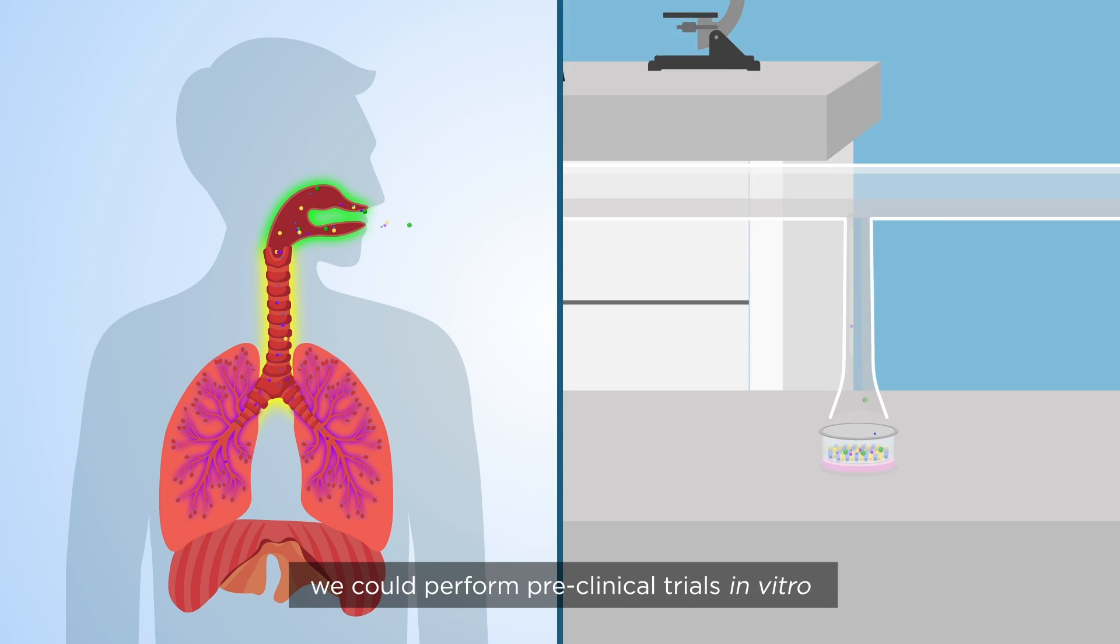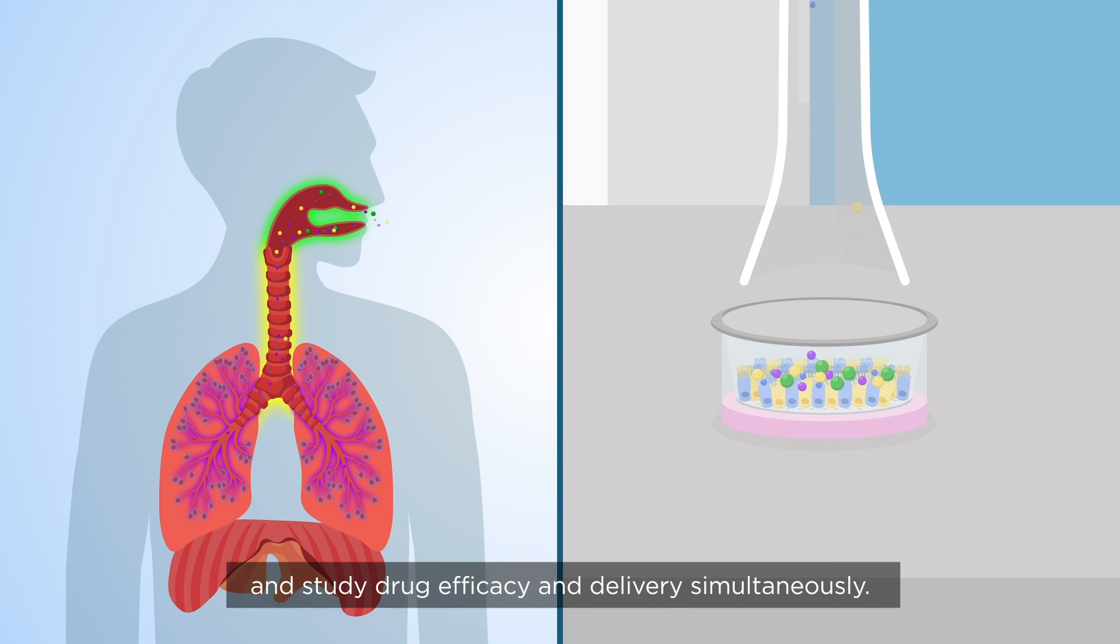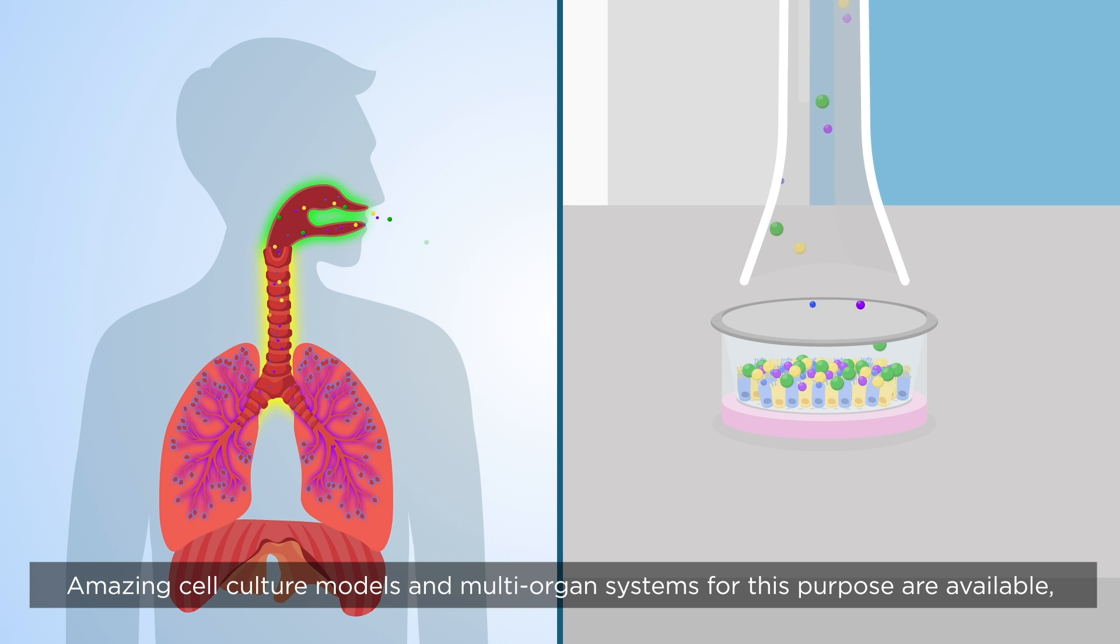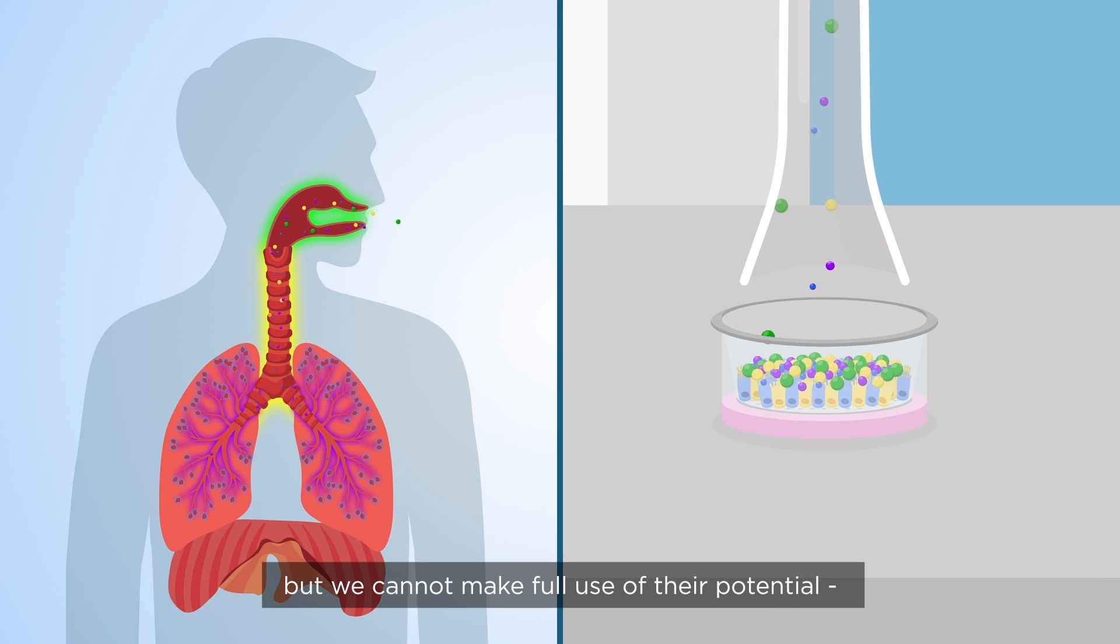We could perform preclinical trials in vitro and study drug efficacy and delivery simultaneously. Amazing cell culture models and multi-organ systems for this purpose are available, but we cannot make full use of their potential simply because achieving realistic dosing is so difficult.